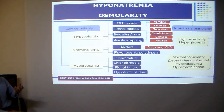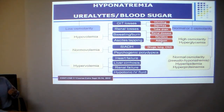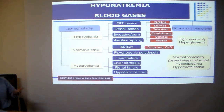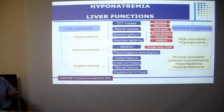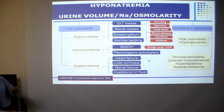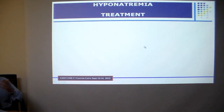Investigations include osmolarity to classify patients, blood sugar, renal function tests, and electrolytes. Hyperkalemia may suggest Addison's disease; alkalosis may suggest vomiting; acidosis may indicate diarrhea, Addison's disease, or renal disease. Liver function tests and urine volume are also relevant investigations.